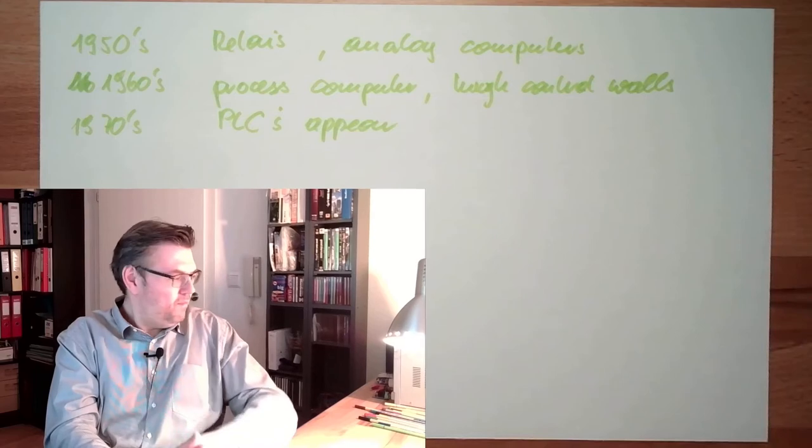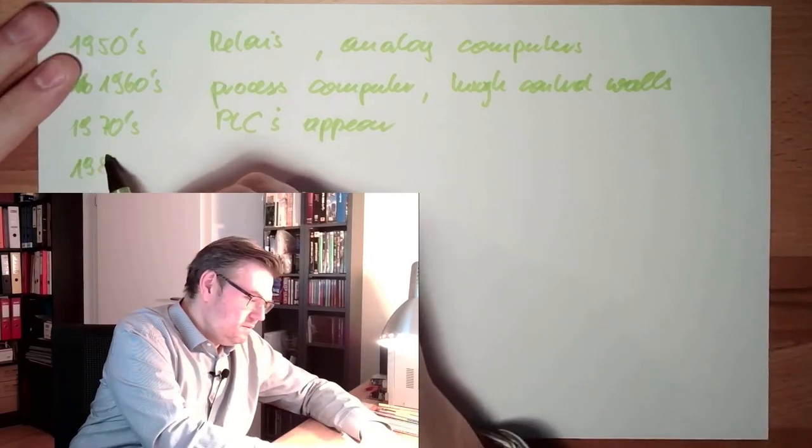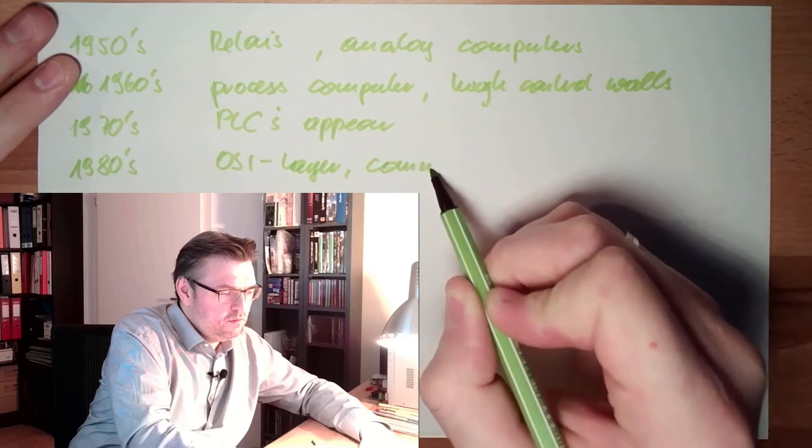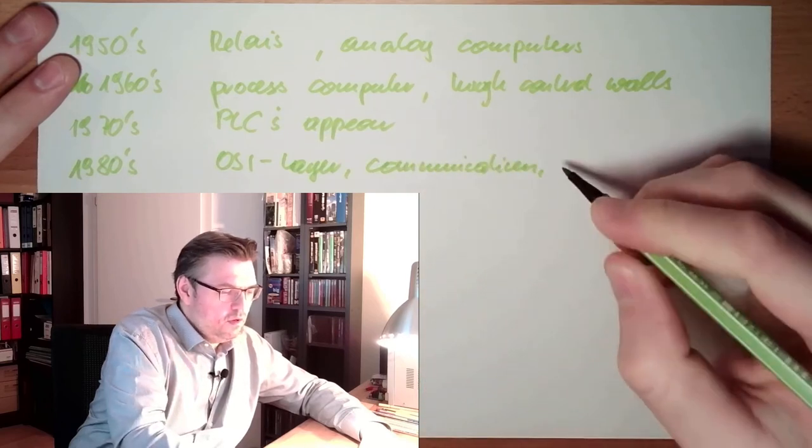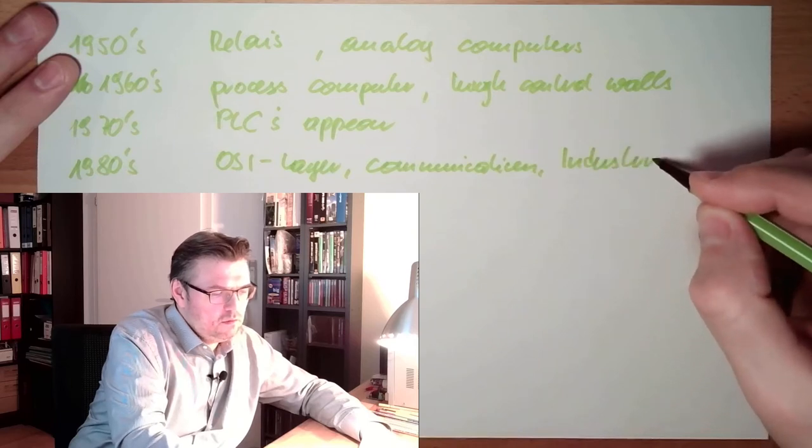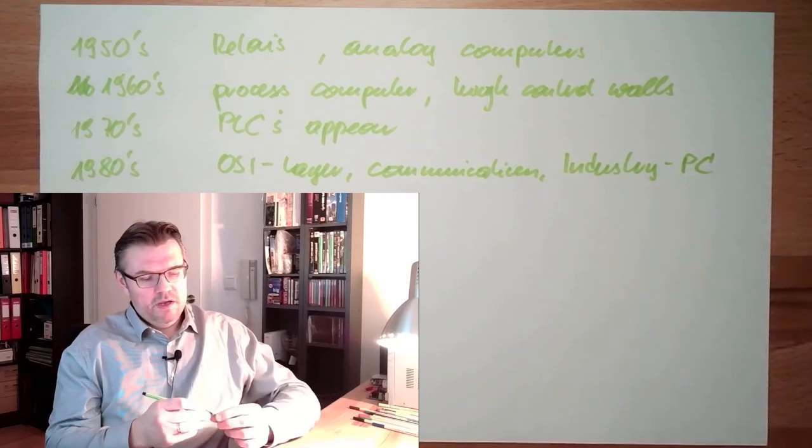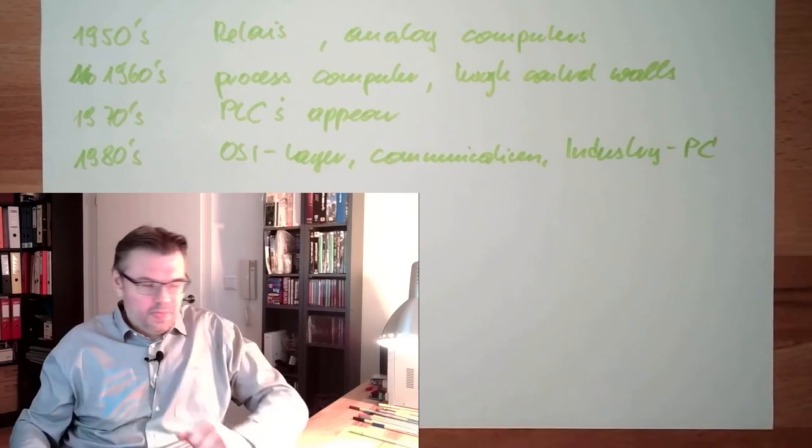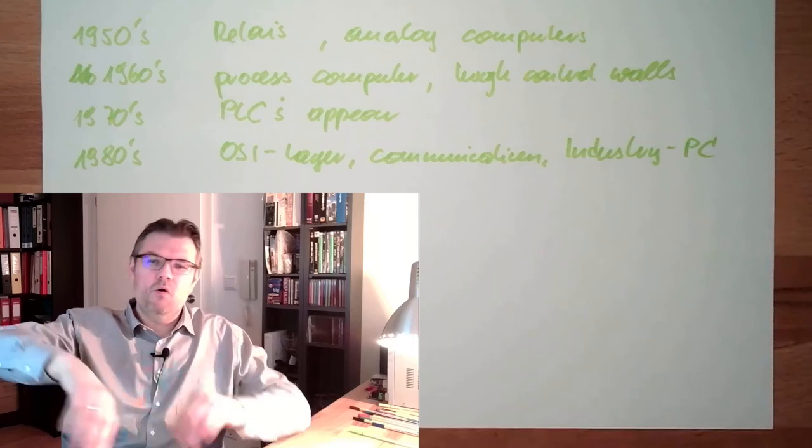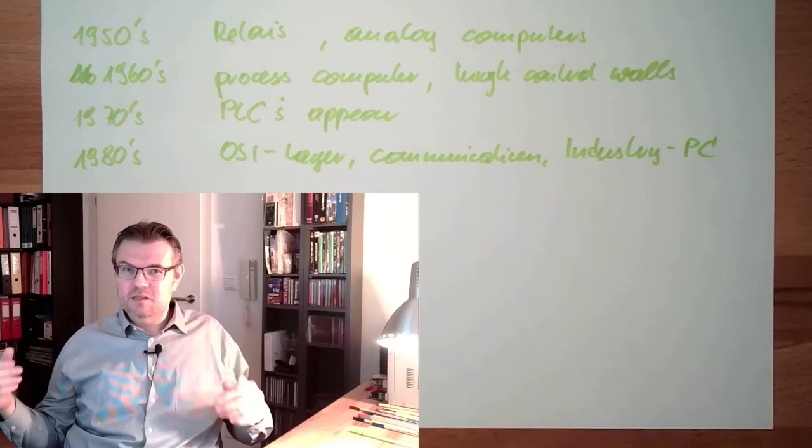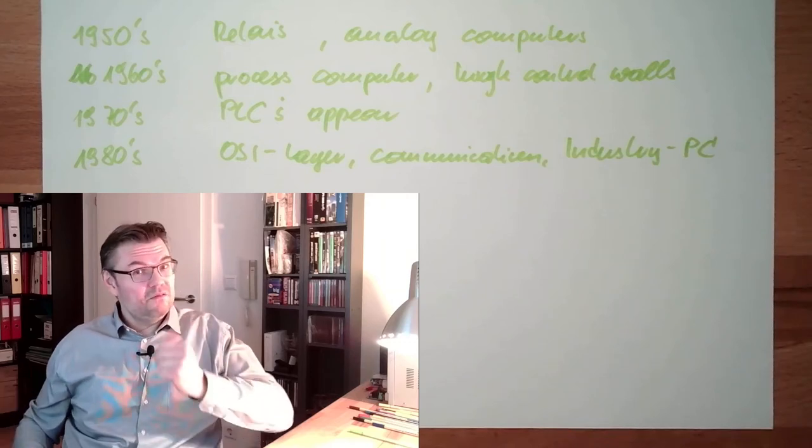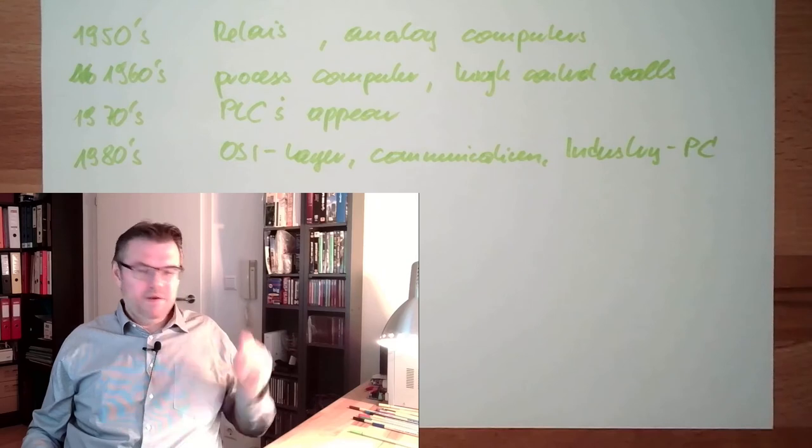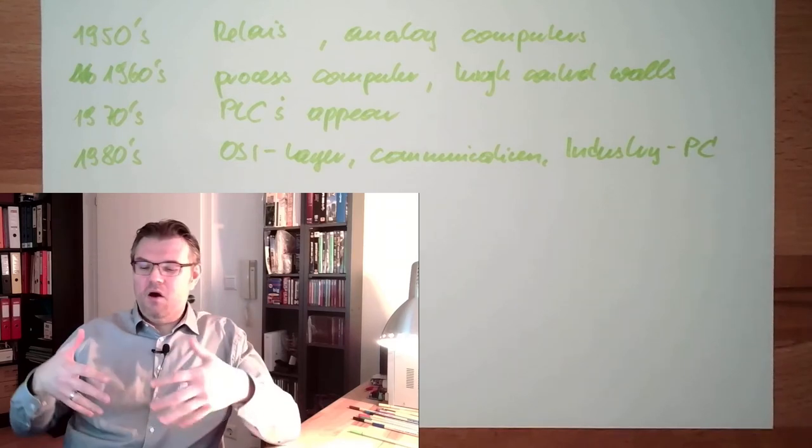This was the 1980s: OSI layer communication, industry PC. A lot of experts then said, okay, industry PC, especially with Windows NT, was great boost for this. Industry PCs, they will take over, they will take over all the automation. It did not come that way, right? PLCs are still the most important things because the PLCs simply did get powerful.